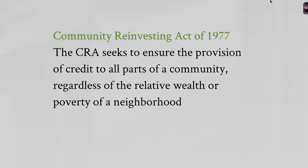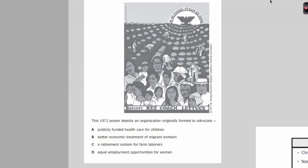Now let's look at how this time period will be assessed with a question using a visual. The question asks: this 1972 poster depicts an organization originally formed to advocate — blank. Looking at the picture, we see 'Sí se puede' — it can be done — written in Spanish. We see fields, and it says 'Boycott Red Coach Lettuce,' with pictures of people picking lettuce. The source is the 1972 Chicago Women's Graphics Collective. This suggests protests for migrant workers' rights.